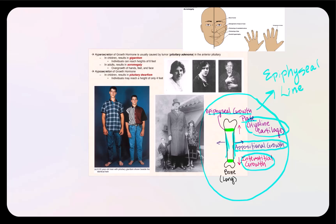Whether the epiphyseal growth plate has ossified determines whether hypersecretion of growth hormone causes gigantism or acromegaly. This hypersecretion is usually caused by a pituitary adenoma in the anterior pituitary. If the epiphyseal growth plate has not yet ossified, the result is gigantism — the individual can continue to grow taller, reaching eight feet or more. A photo of identical twins illustrates this: one twin has gigantism while the other does not, and the difference in stature is clearly visible.